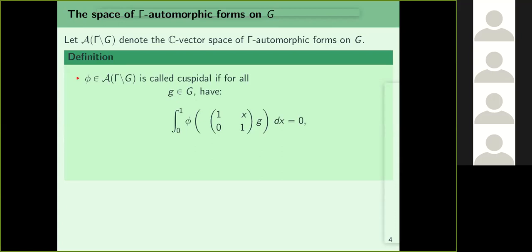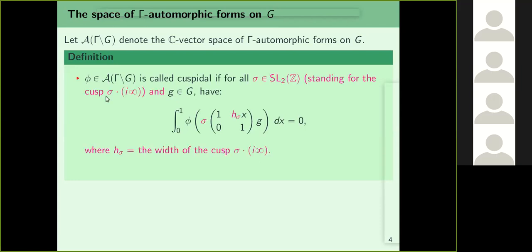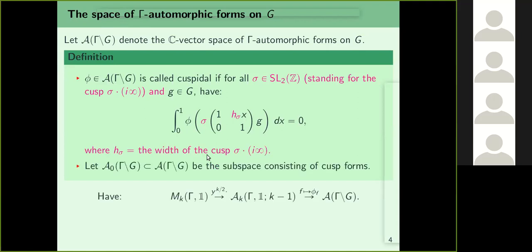This only deals with the cusp at infinity. Other cusps can be written as sigma times i-infinity, where sigma varies over SL2(Z); those cusps have a width and we have to move phi's focus from infinity to sigma times i-infinity. Some normalizations may be off. The notation A^0(G/Gamma) ⊆ A(G/Gamma) will denote the subspace of cuspidal automorphic forms.